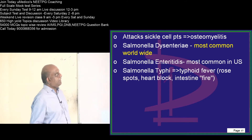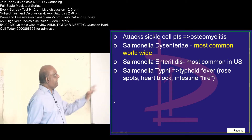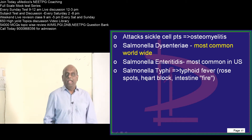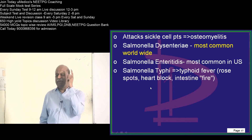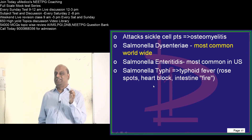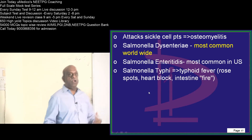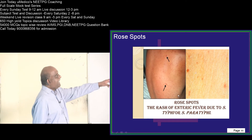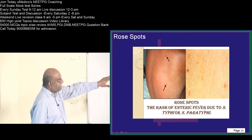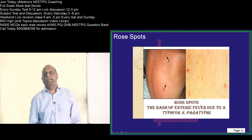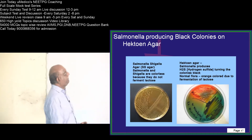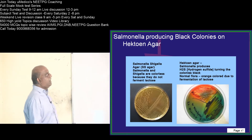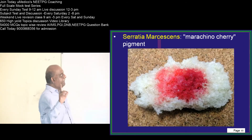Salmonella dysenteriae is the most common type worldwide, whereas Salmonella enteritidis is most common in America. Salmonella typhi leads to typhoid fever. The buzzword about typhoid fever is rose spots — you should not forget. It can also lead to heart block; typical typhoid fever can cause mortality due to heart block. The agar that detects sulfur production by Salmonella is called Hektoen agar — definitely one question is going to come.